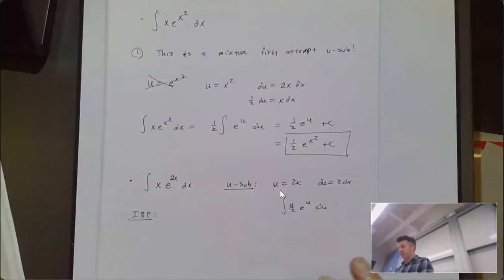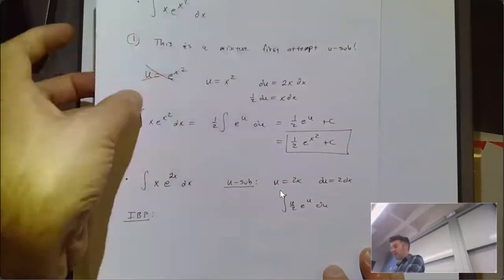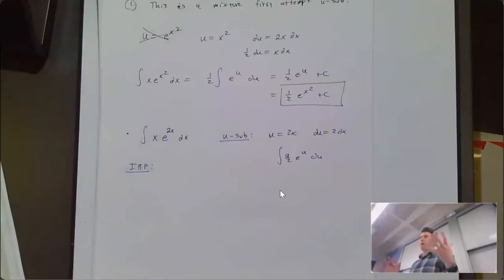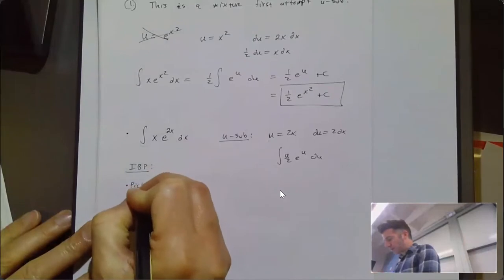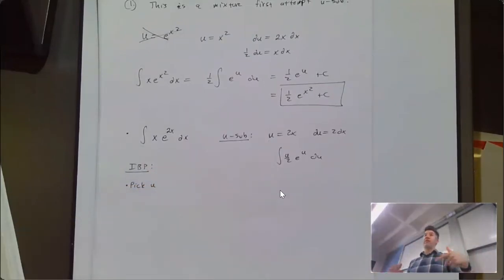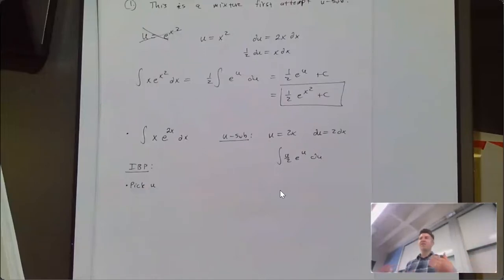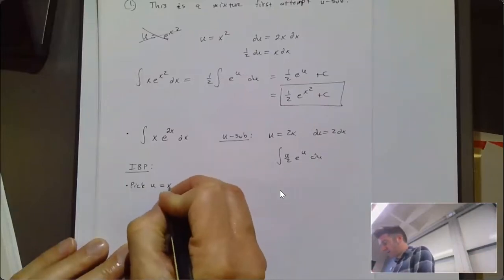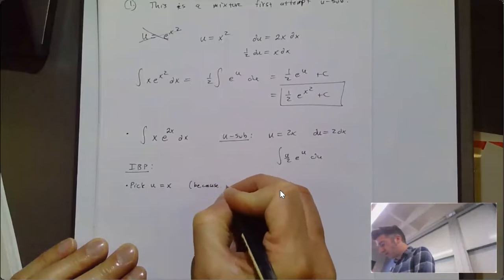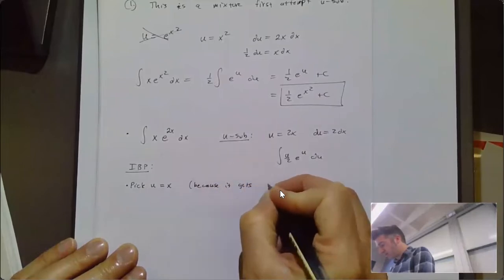When doing integration by parts, you want to pick u so that when you take its derivative, it gets simpler. Of the two choices, u equal to x or u equal to e^(2x): if u equals x, its derivative is 1, which is simpler. If u equals e^(2x), its derivative is 2e^(2x), which is essentially the same — it didn't get simpler. So we pick u equal to x.